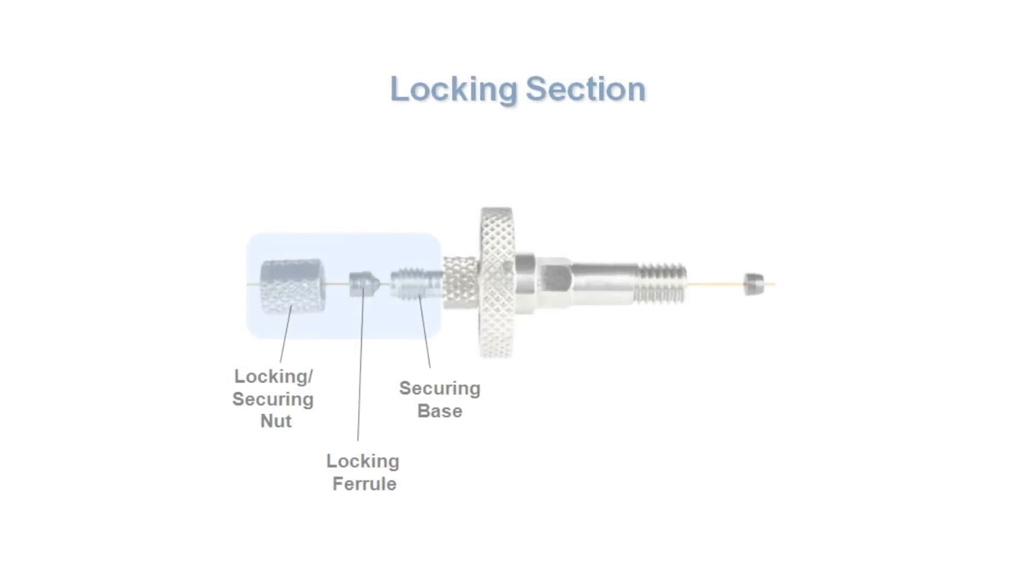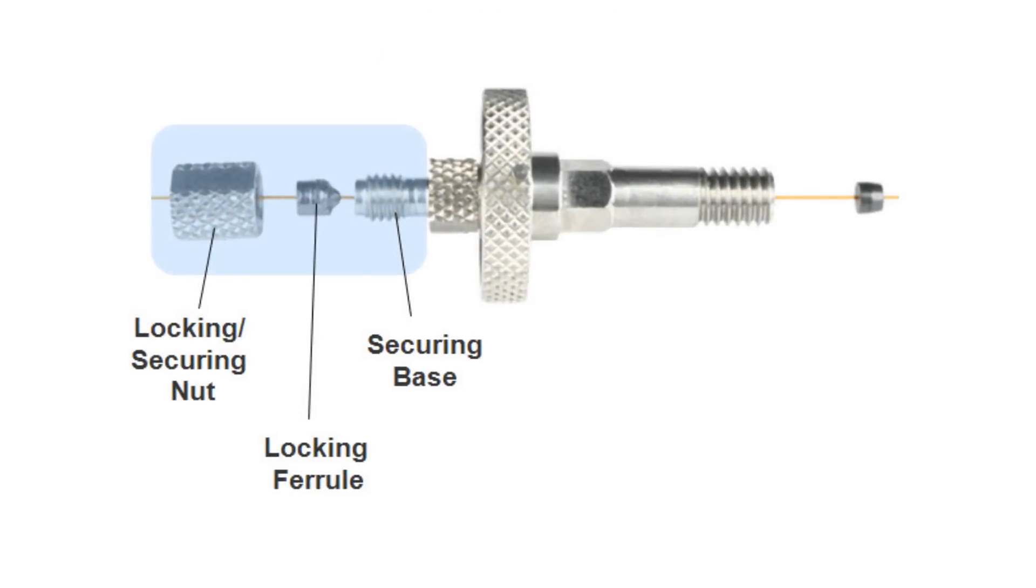The locking section is formed by the securing nut, lower ferrule, and securing base. This section has two main purposes. It helps to ensure a consistent and proper installation depth throughout the installation process, and because it ensures the proper installation depth, it is also responsible for improved reproducibility.